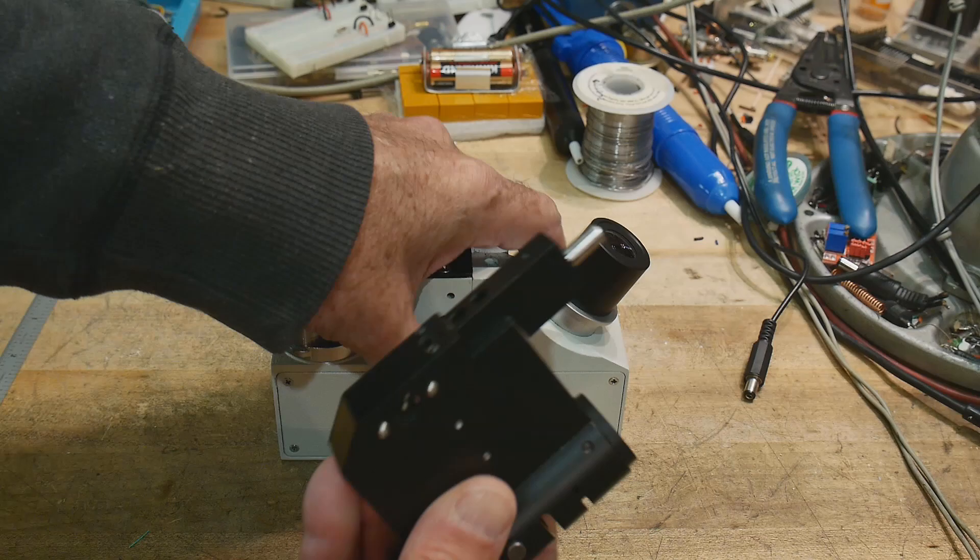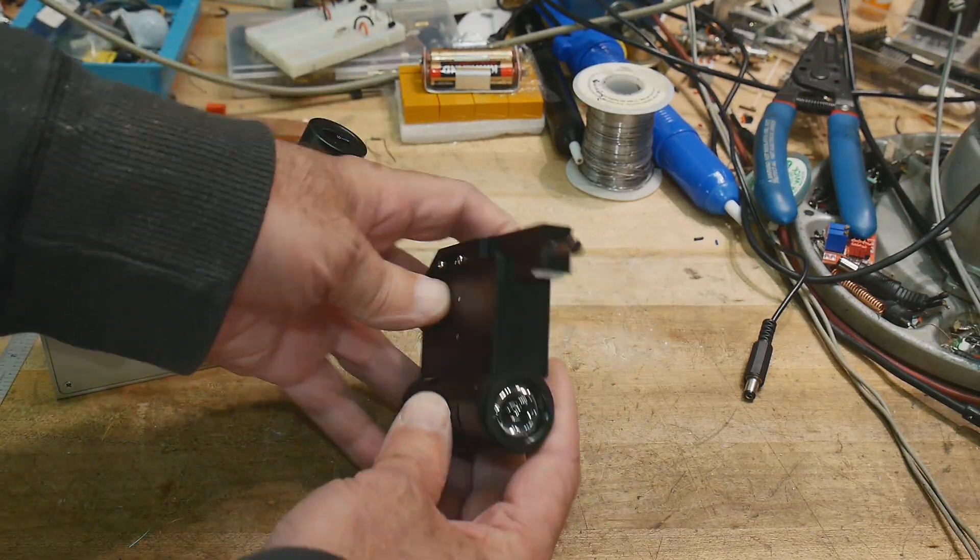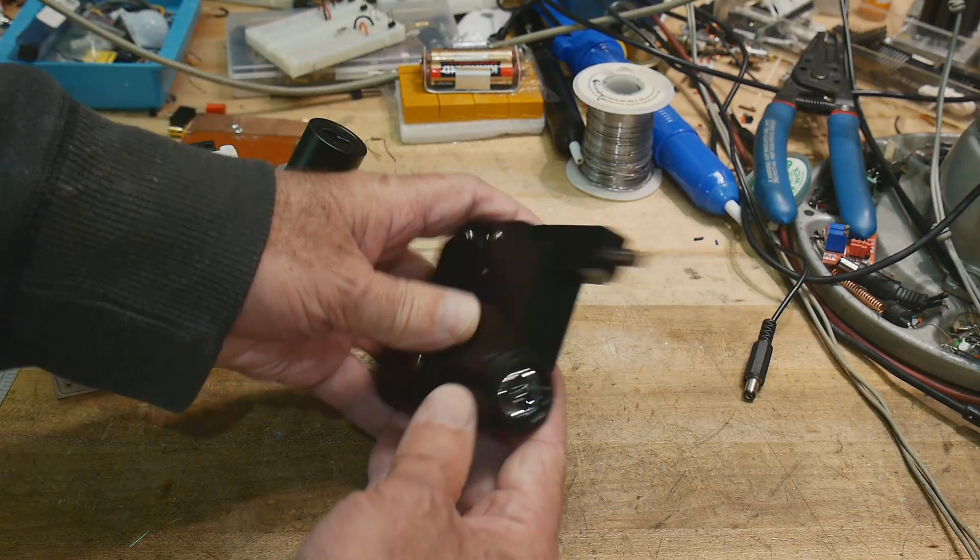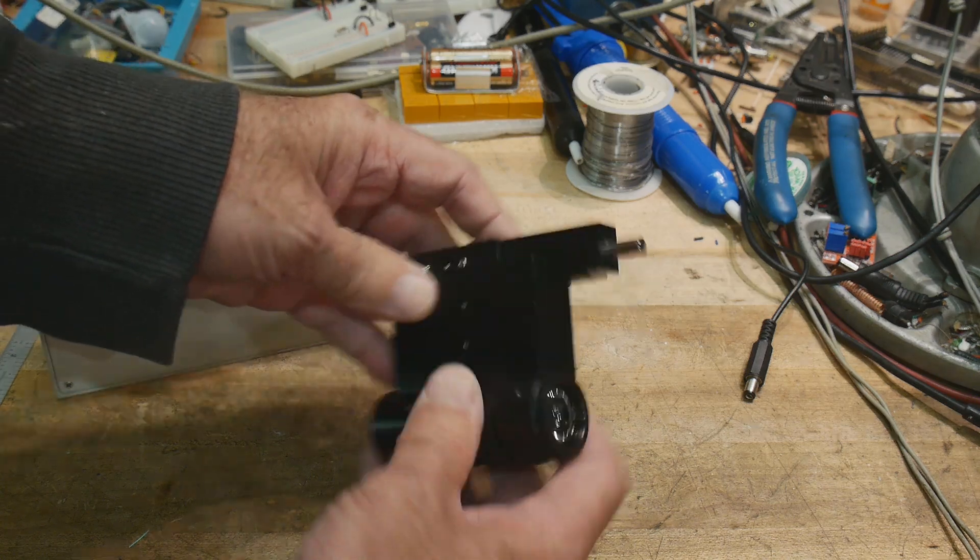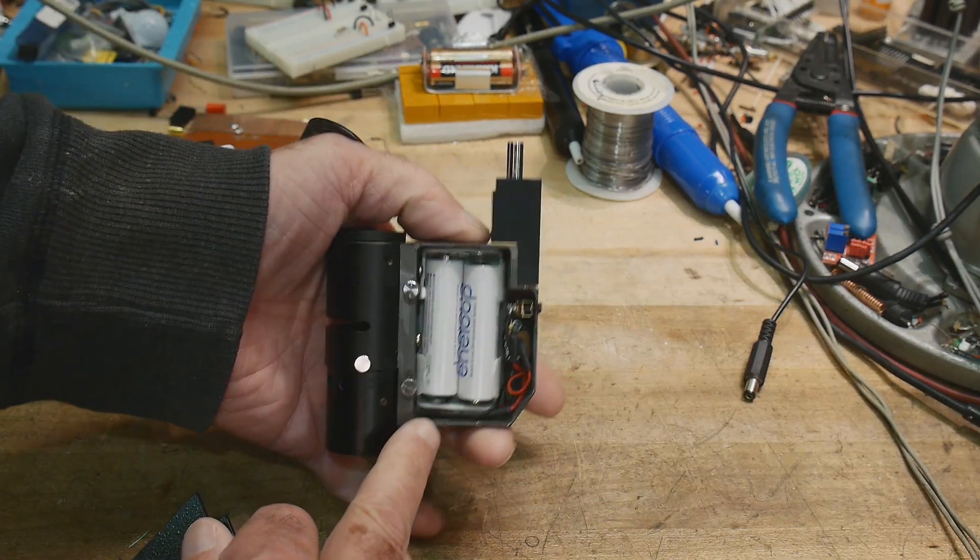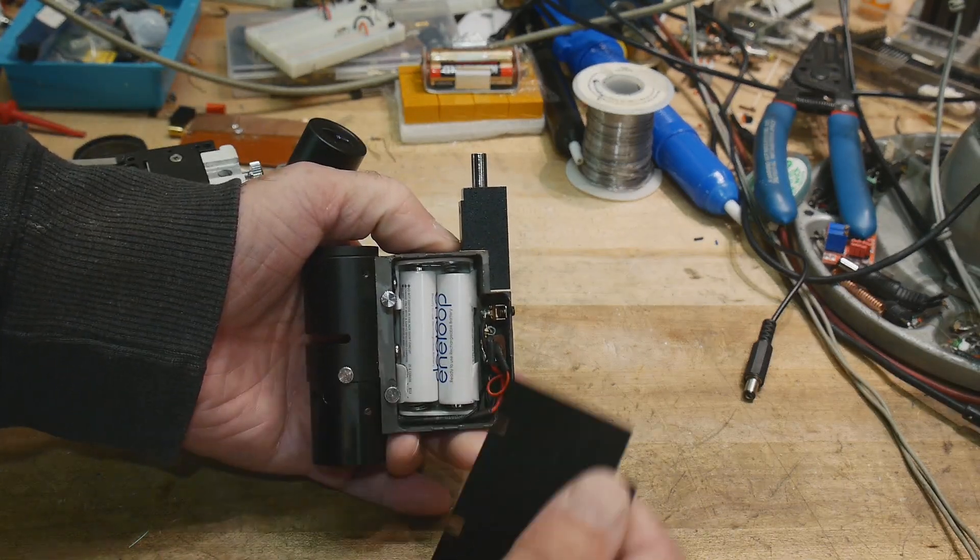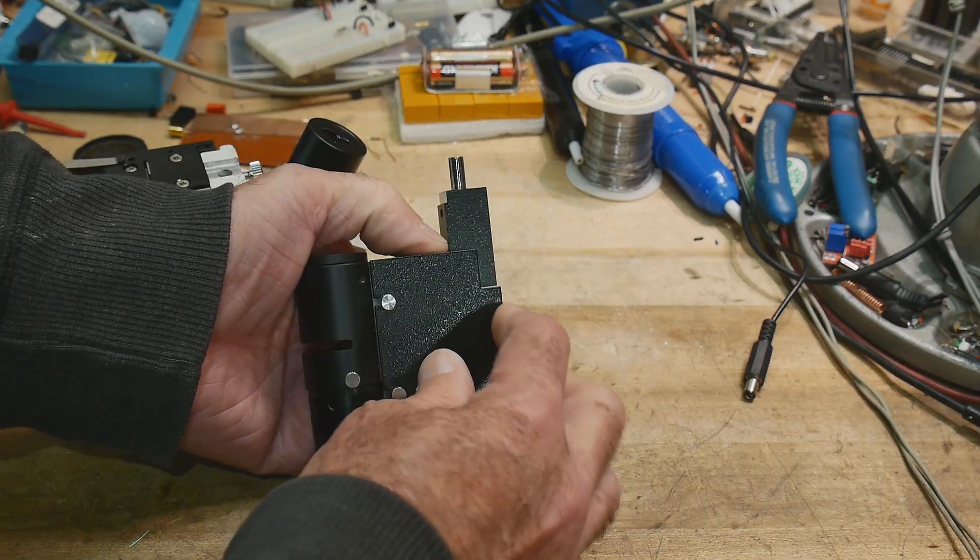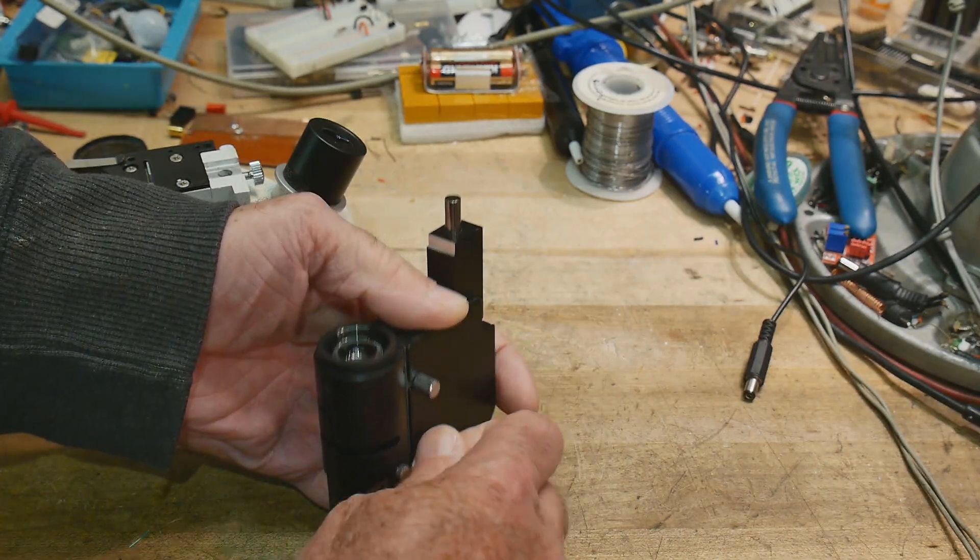Usually the condensers are underneath the microscope, but this is a condenser—it has a condenser lens in it and a light source. I can open this up and you can see it's got batteries inside. In fact, it came with Eneloop batteries, which is cool—rechargeable batteries—and it's LED-based, of course.